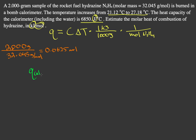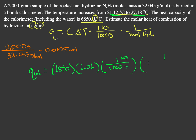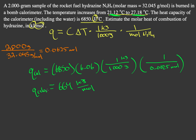Now we can do our calculations. Q of the calorimeter equals the specific heat, which is 6850, times the temperature change — final minus initial — which gives us 6.06. Then we multiply by 1 over 1,000 for kilojoules per joule, and by 1 over 0.0625 moles of hydrazine. This gives us an answer of 664 kilojoules per mole, which is the heat of combustion for the calorimeter.